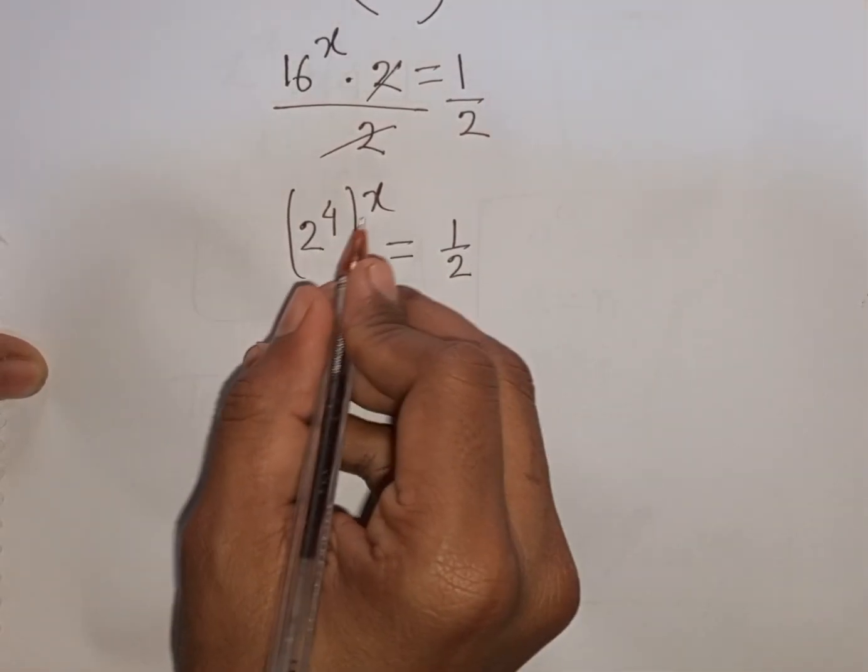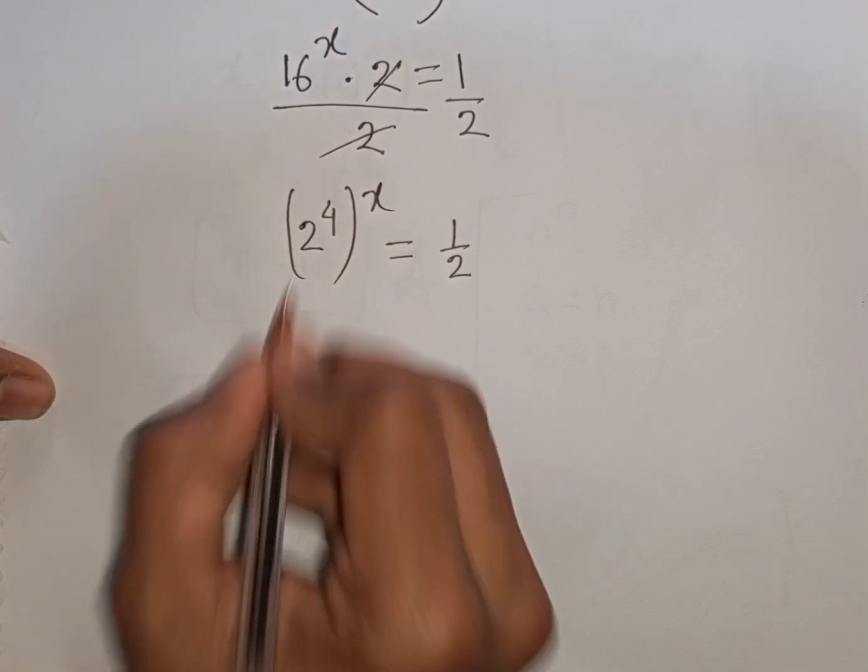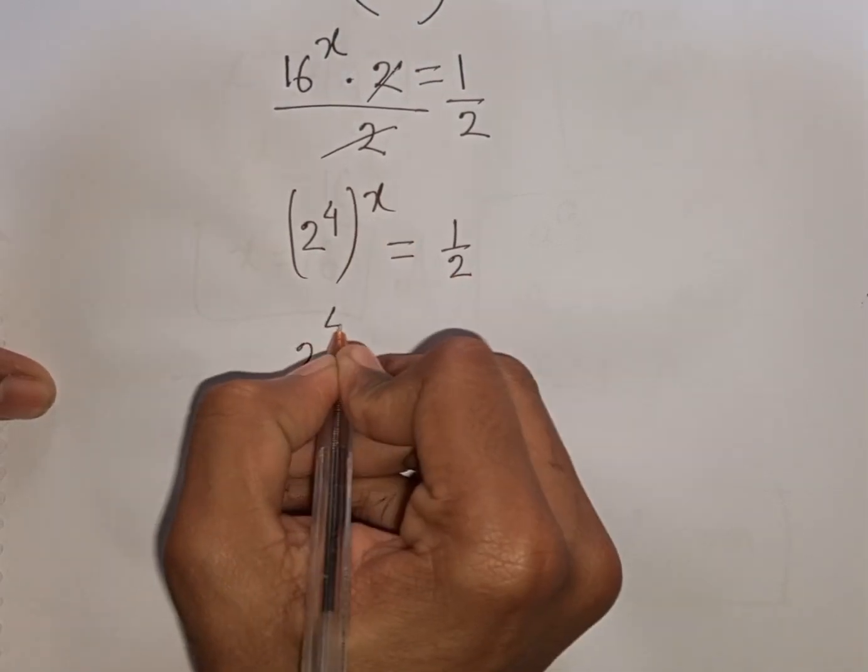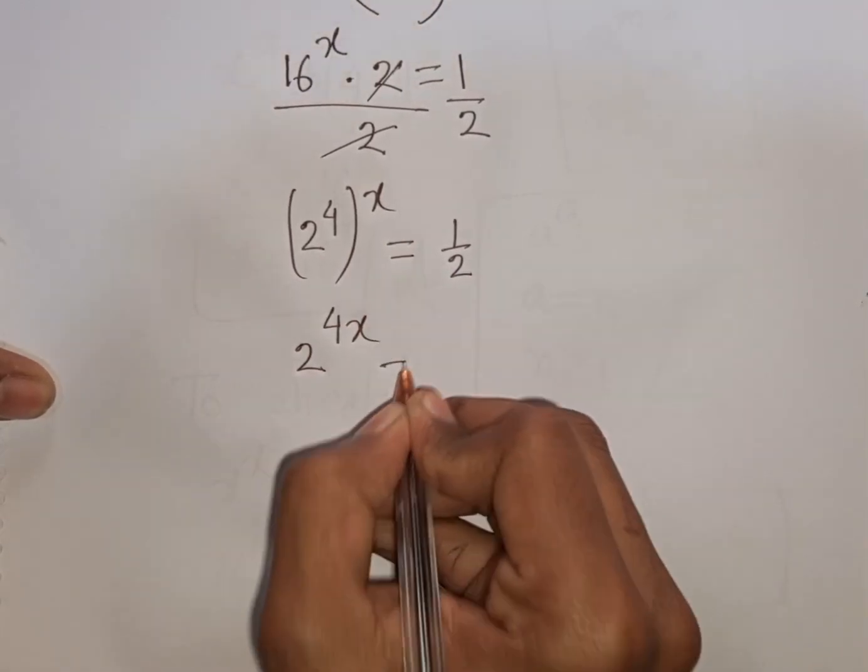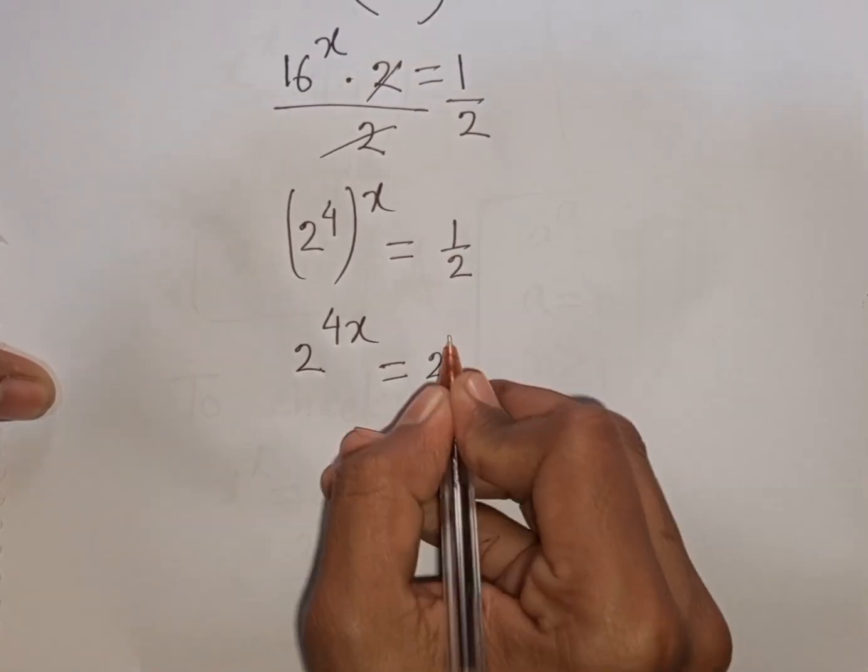Now (2^4)^x can be written as 2^(4x), which equals 1/2, which can be written as 2^(-1).